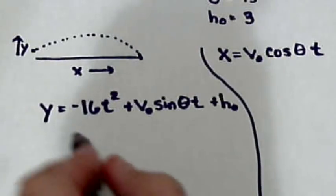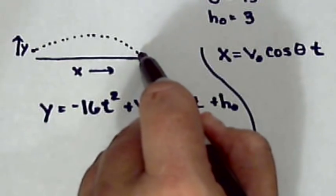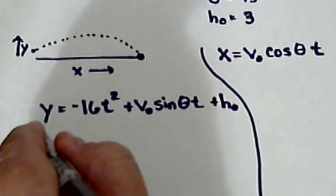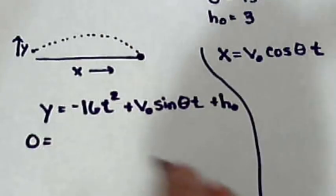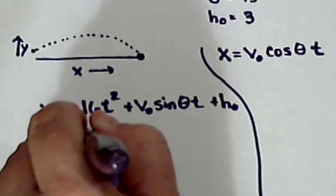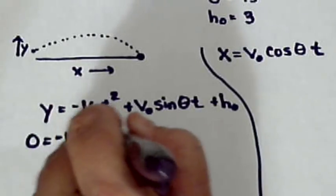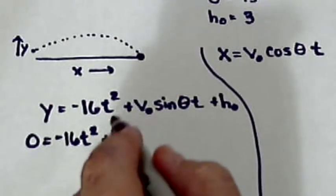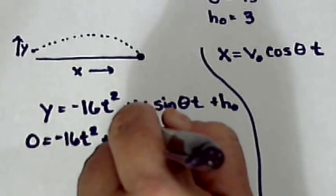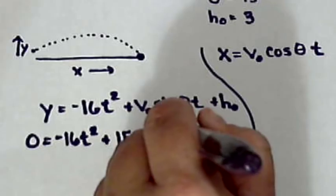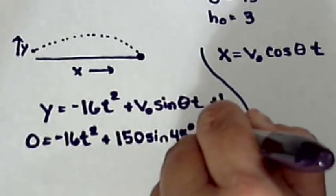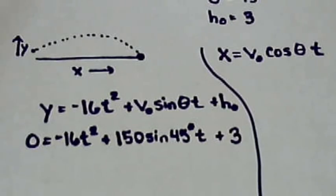And we know most of this. We know that when the ball lands, we're looking for the time it takes to get here. Well, the height would be 0. We're solving for T. We know the initial velocity was 150 sine 45 degrees T plus 3.